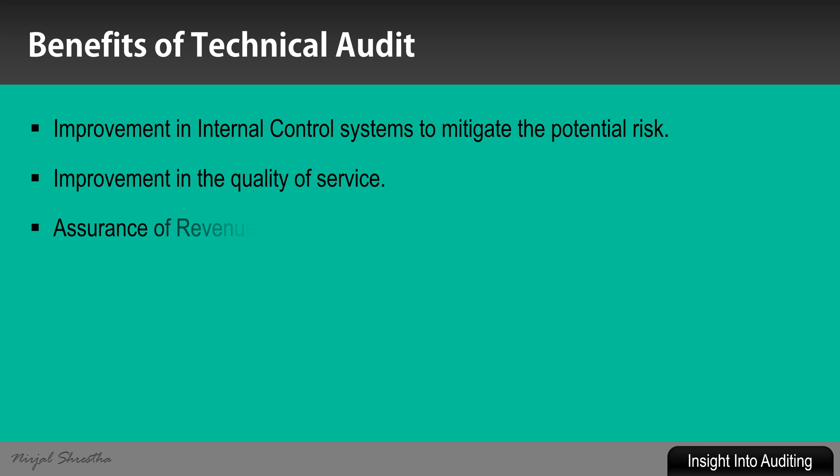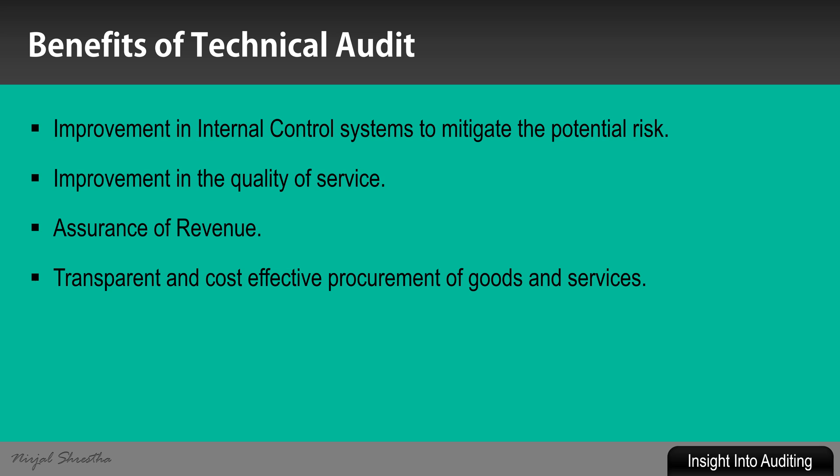Assurance of revenue: any leakages or revenue loss will be detected by technical auditing, and correction of such leakage will assure the revenue of the company. It also helps to pursue transparent and cost-effective procurement of goods and services based on the fundamental principles of procurement — those being transparency and cost efficiency.